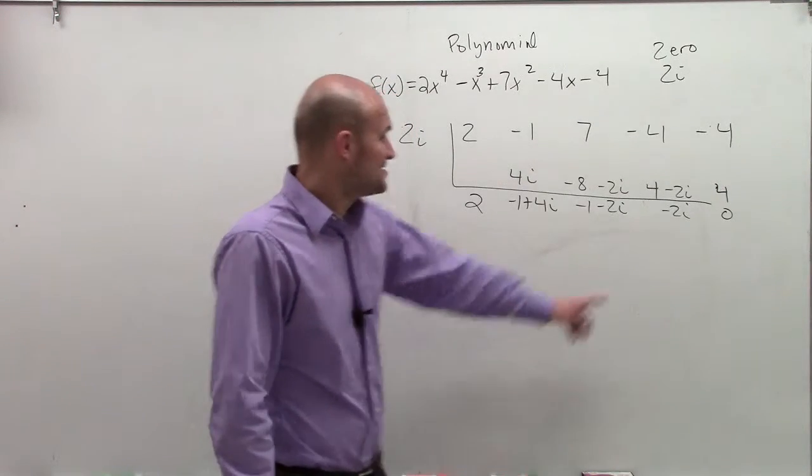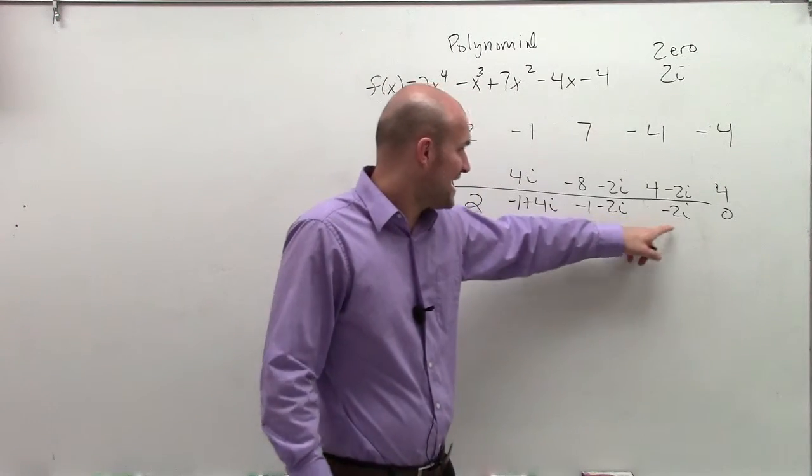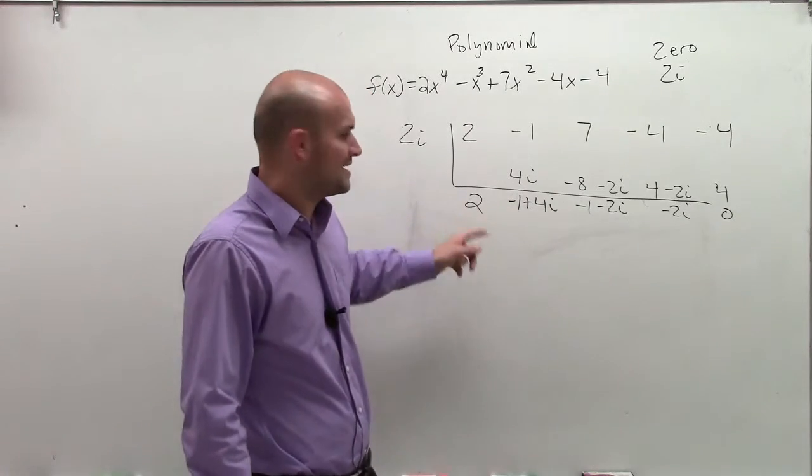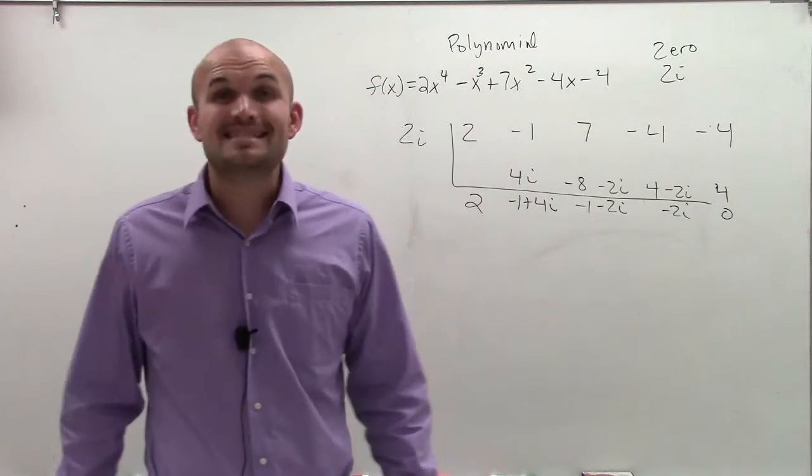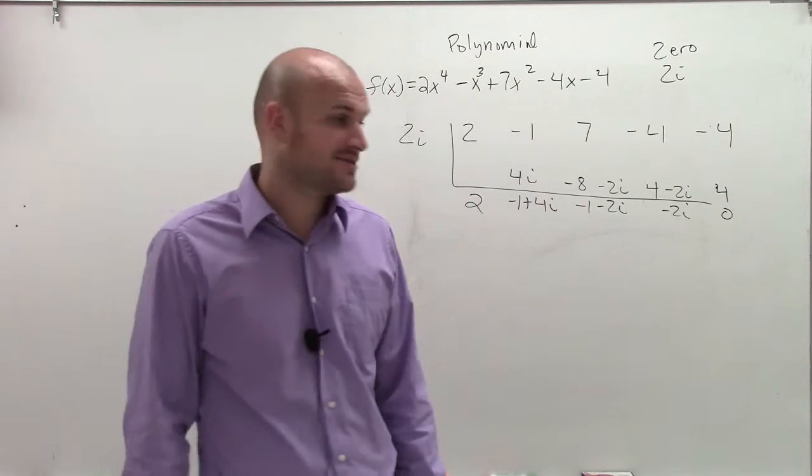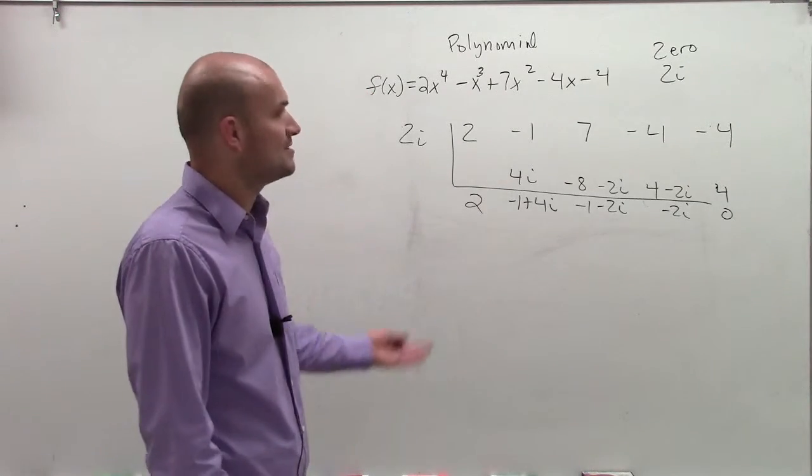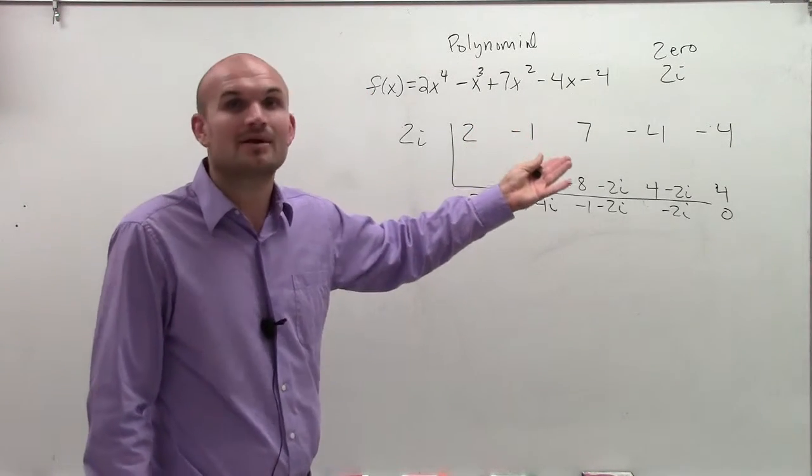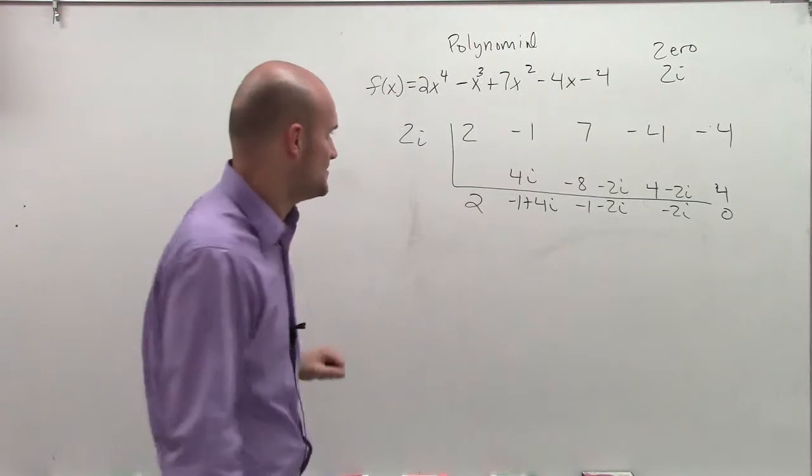So now you might say, holy crap, so I have my remainder, constant, linear, quadratic, and cubic. That is still a lot of zeros, right? So what do I do next? Well, same thing. If we know 2i is a zero, then what else has to be a zero? Negative 2i.